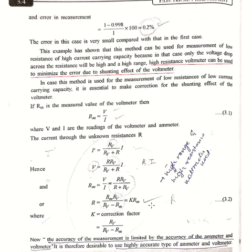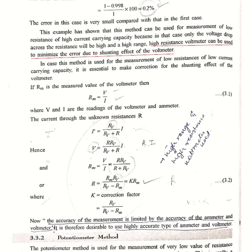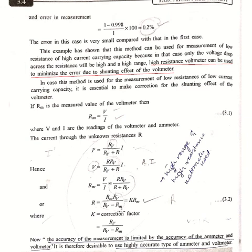The accuracy of the measurement is limited by the accuracy of the ammeter and voltmeter, and it is therefore desirable to use highly accurate instruments. In this lecture we have completed our introduction to the measurement of resistance and studied the first method — the ammeter-voltmeter method. In the next lecture we will study the potentiometer method. For any query related to this topic you can write to me. Lecture notes will be provided on the college website. Stay healthy, stay safe.